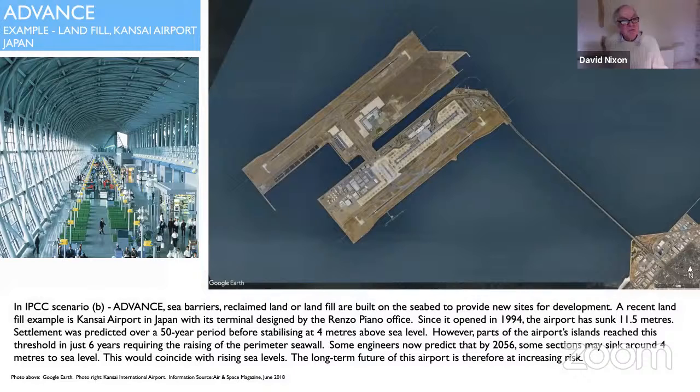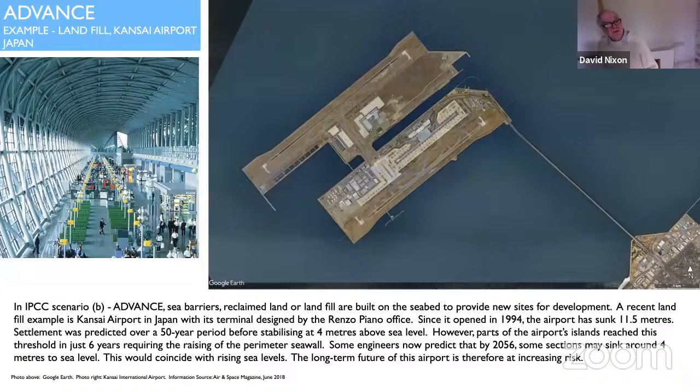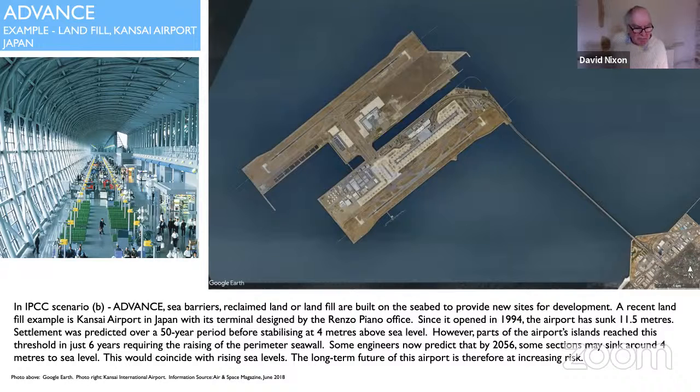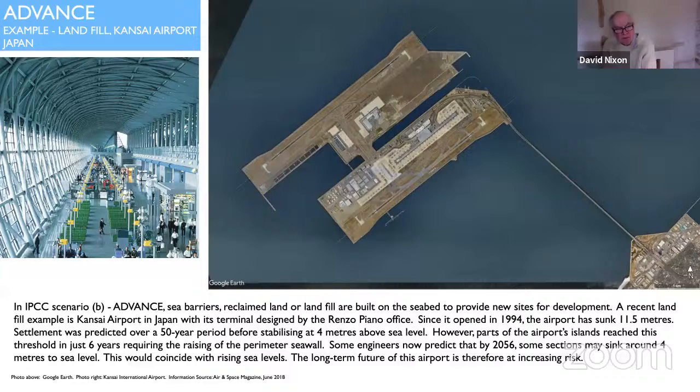So let's move on to the next category, which is advance. What kind of structures can be built out in the water to keep the water back? Here is an example of a very large sea barrier built on reclaimed land, landfill, in Japan, to support the Kansai airport that was built off the Japan coastline in 1994. Renzo Piano did a very fine airport terminal there.